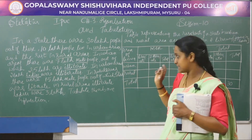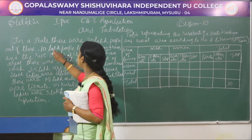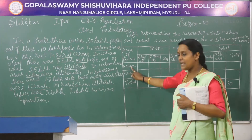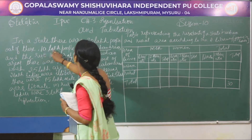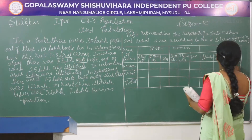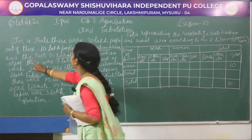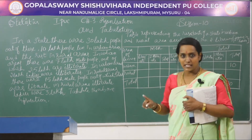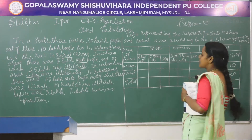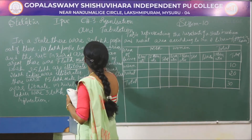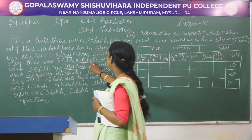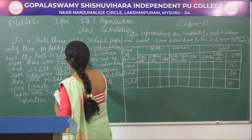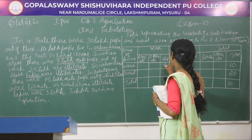30 lakhs — out of these, 10 lakhs people live in urban areas, so total urban area population is 10 lakhs. Rest are in rural areas: 30 minus 10 is 20 lakhs in rural area. In urban areas there were 7 lakh male people, so urban area men total is 7 lakhs.